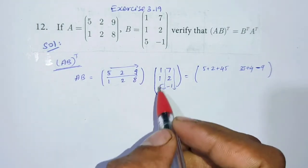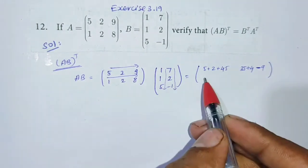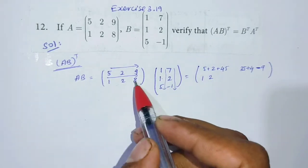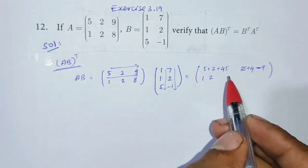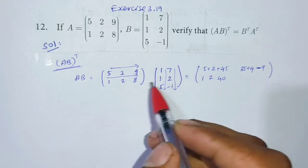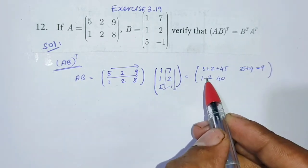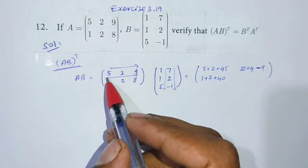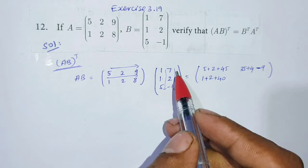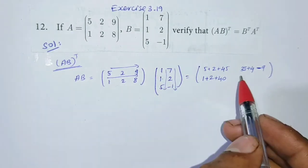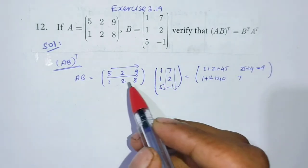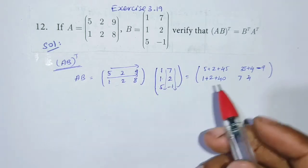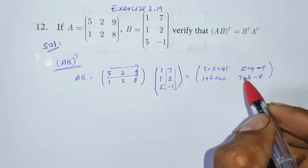Second row, first column: 1×1=1, 2×1=2, 8×5=40. One row, one column multiply, that is one element — add them up. Next, second row, second column: 1×7=7, 2×2=4, 8×(-1)=-8. Okay, one row, one column multiply — that is one element, plus.